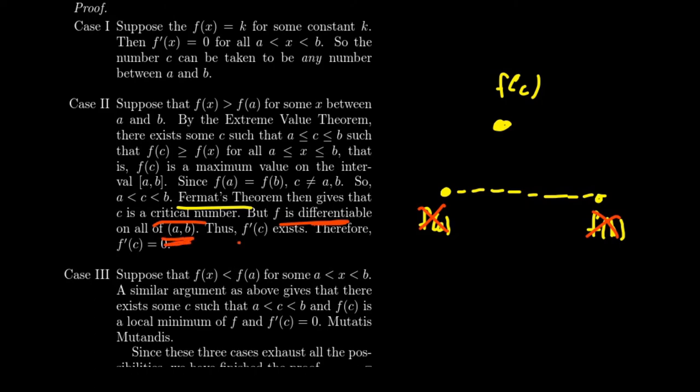Therefore, f'(c) exists. And so by Fermat's theorem, we see that it's going to have to equal zero. So there has to be a horizontal tangent line at this value x equals c. Now, similarly, if there's some f(x) that's less than f(a), a similar argument can be used here. The Latin phrase is mutatis mutandis, which basically just says change the appropriate parts.